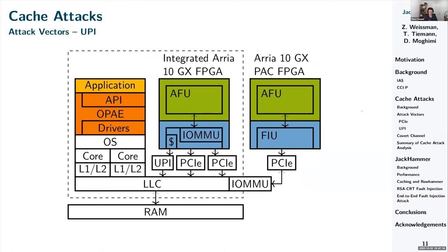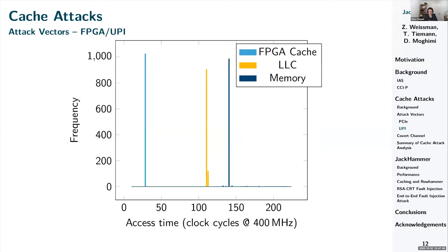The histogram shows two distinct peaks for the two locations; even though they are close together, last-level cache requests are clearly distinguishable from DRAM because the timer is very precise and outliers are rare. For the UPI case — only available on the integrated FPGA — we expected three distinct peaks because of the additional FPGA cache. We can indeed see three distinct peaks. The FPGA cache shows a constant access time without outliers because it is part of the blue region. The UPI bus has very high bandwidth, keeping the other peaks slim as well. This confirms an FPGA-based attacker can perform the timing measurements required by flush-and-reload and prime-and-probe.